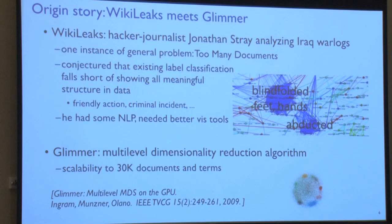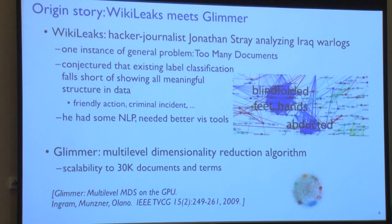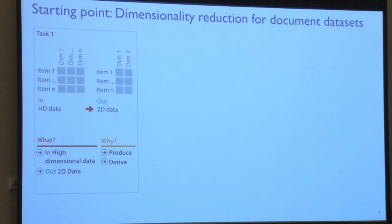Jonathan had done a lot of natural language processing and was in search of better viz tools. He ran across work from my own group — a dimensionality reduction algorithm that used the GPU to do things more quickly, scaling up to about 30,000 documents and keywords. So the question was: could we do better? Could we actually advance things by taking this particular task and putting it together with this kind of technique? That was the starting point of the collaboration.